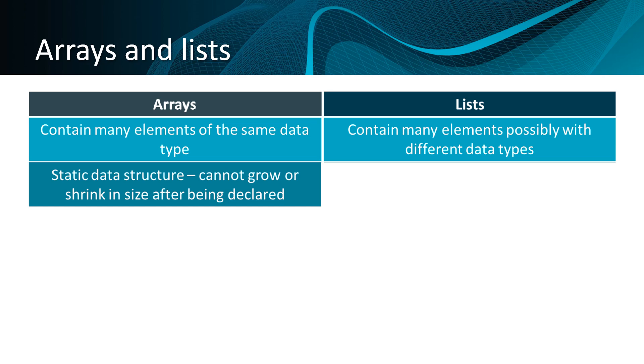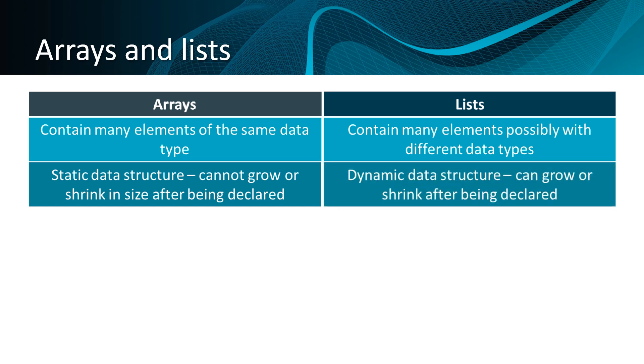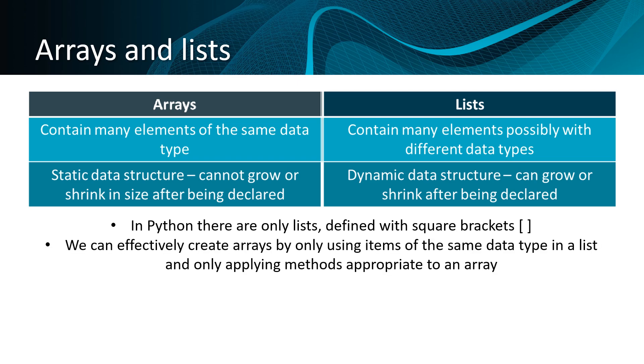Lists, on the other hand, are a form of dynamic data structure. That means they can grow or shrink after they've been declared. In Python, there are actually only lists, defined with square brackets. However, we can effectively create arrays by only using items of the same data type in a list, and only applying methods appropriate to an array. Therefore, we wouldn't do things like append to the array or remove from the array.